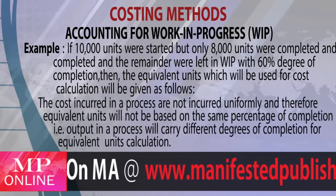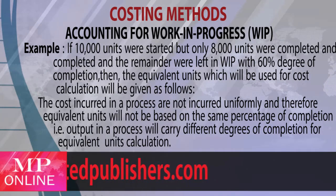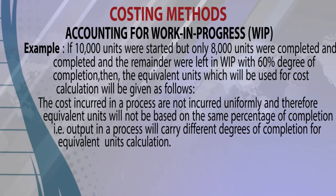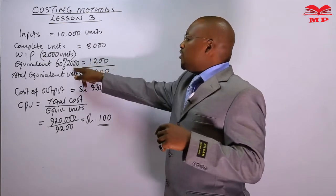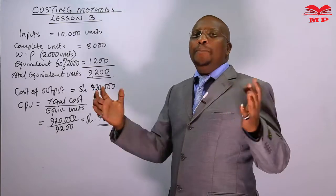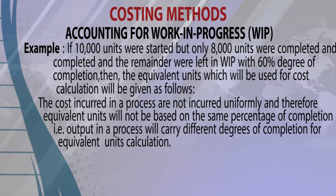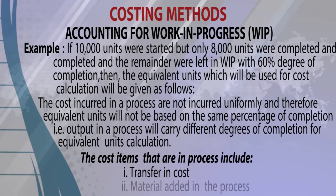The costs incurred in a process are not incurred uniformly, and therefore equivalent units will not be based on the same percentage of completion. Output in a process will carry different degrees of completion for the equivalent units calculation. The cost items in a process are: one, transfer-in cost; two, material added in the process; and three, conversion cost.